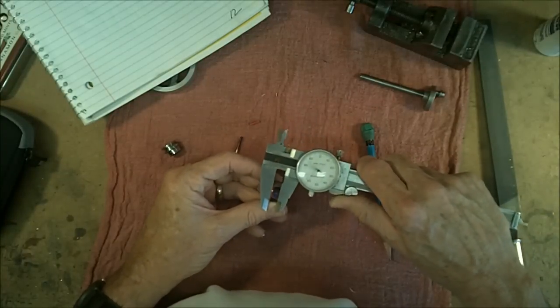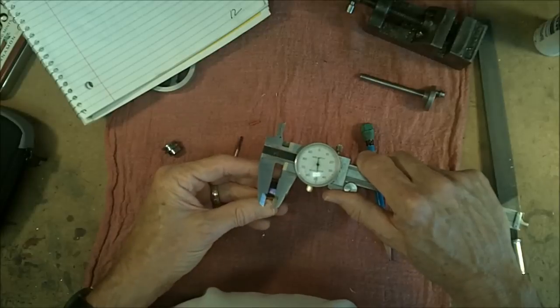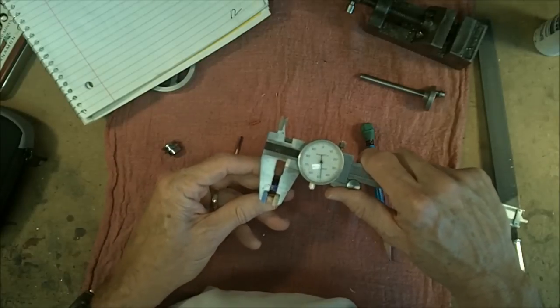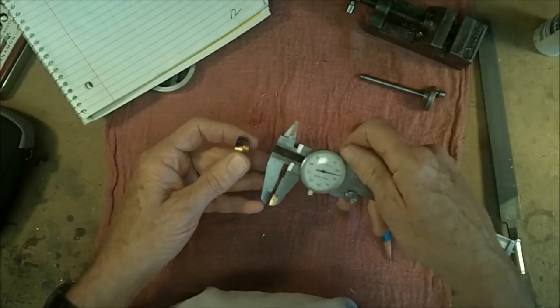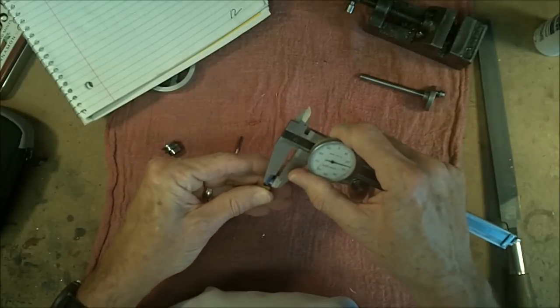Now, next thing is, this is 250 thousandths wide. I want to go halfway between it. Obviously, that's 125 thousandths. Come back 125 thousandths, tighten that up, run it across.